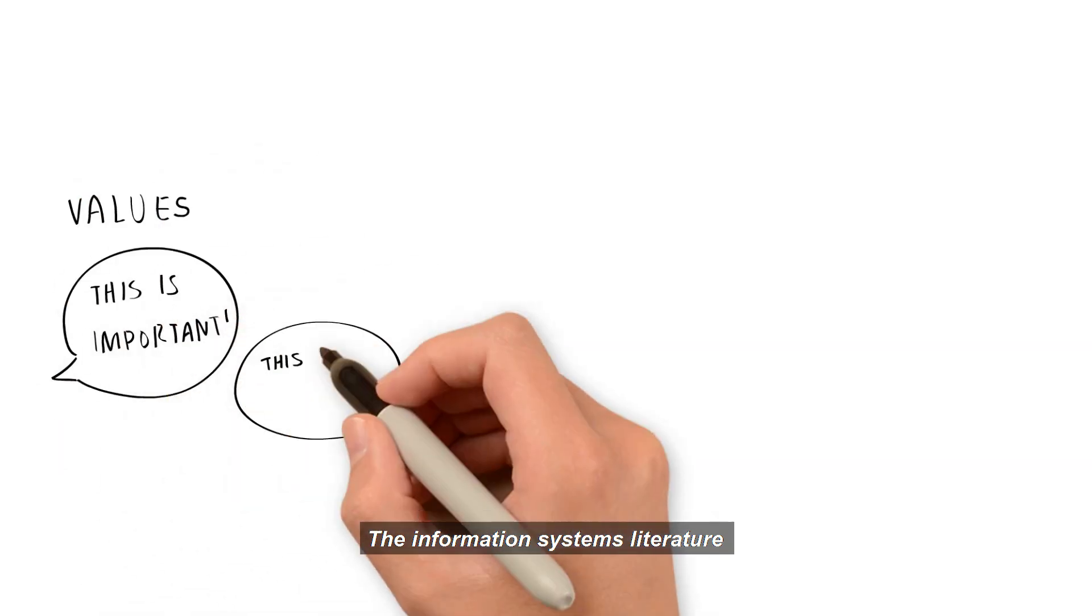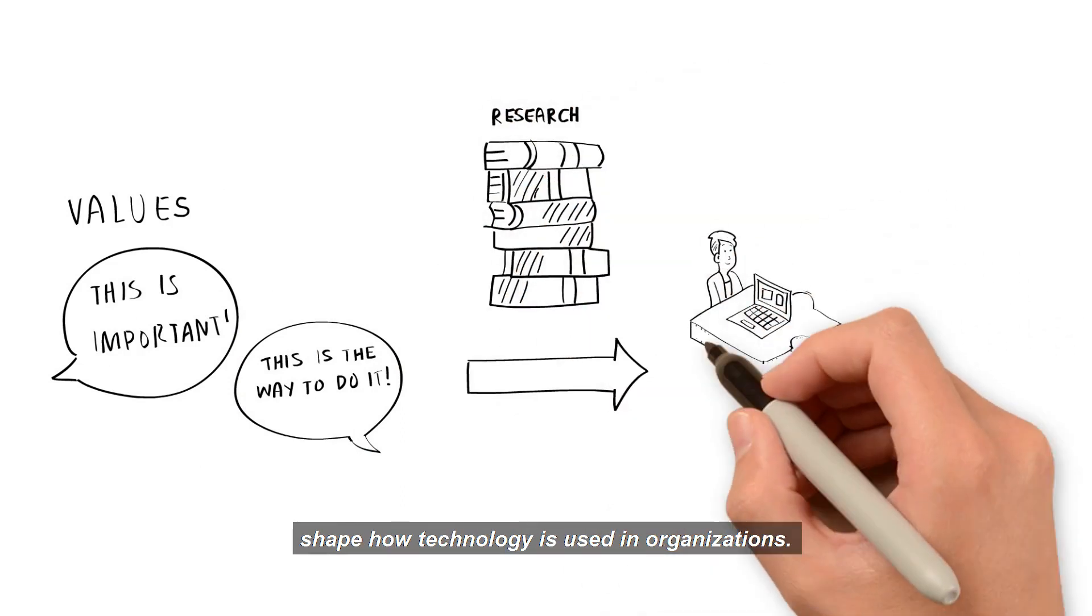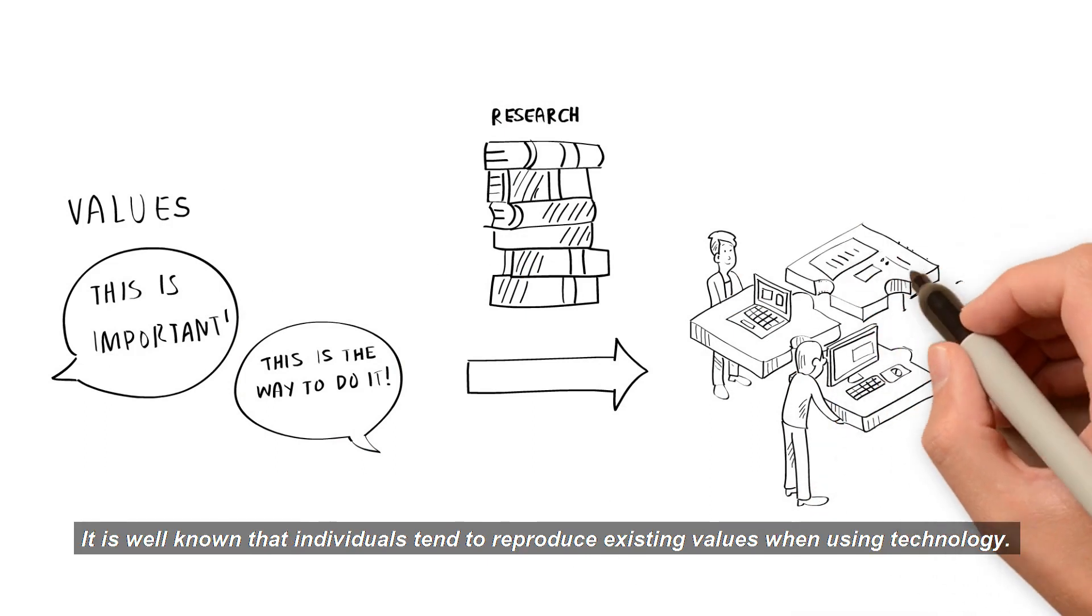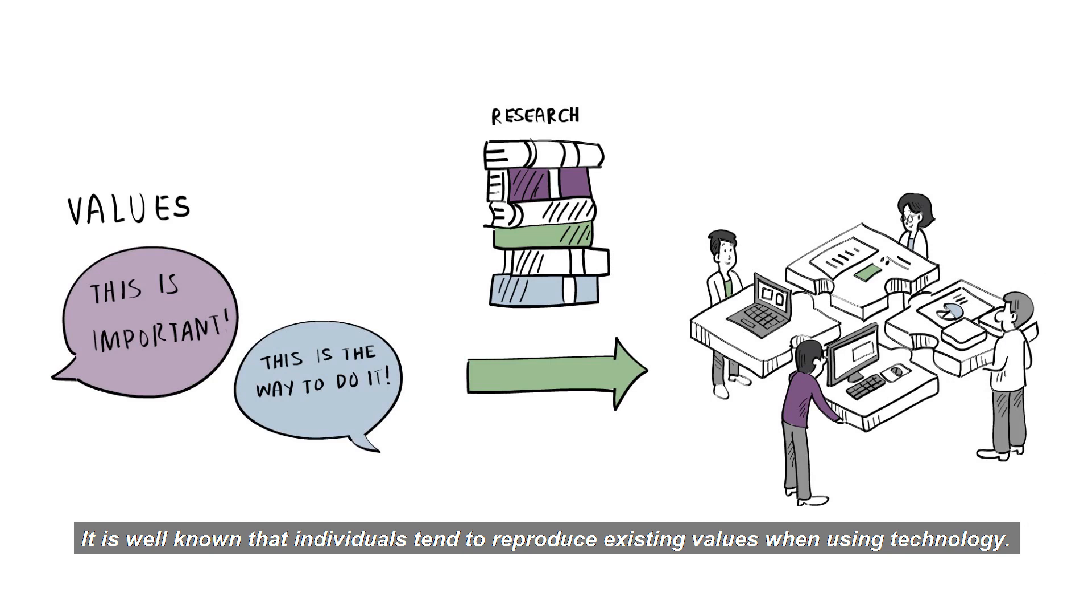The information systems literature has paid vast attention to how existing values shape how technology is used in organizations. It is well known that individuals tend to reproduce existing values when using technology.